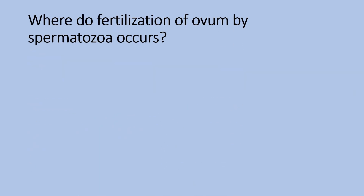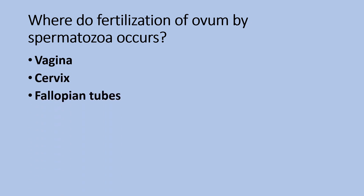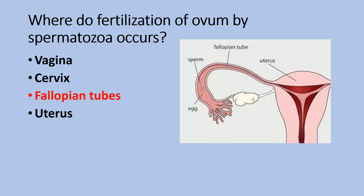Next question: where does fertilization of the ovum by spermatozoa occur? Is it in the vagina, is it in the cervix, is it in the fallopian tubes, or is it in the uterus? The answer is the fallopian tubes. The fallopian tubes are between the ovaries and the uterus in the female pelvis, and their main function is to channel the oocyte — the developing egg — for transport and fertilization.